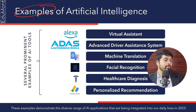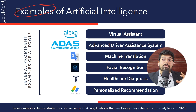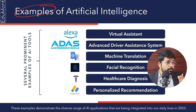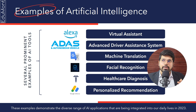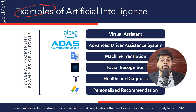Facial recognition — I place my face in front of my phone and I'm able to unlock it. My device recognizes my face as a password and opens up. Even laptops and security systems have it. Biometric recognition is also a kind of example of AI in everyday use.